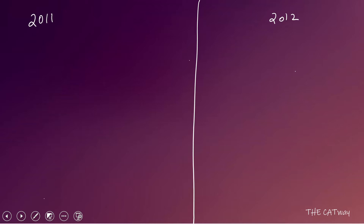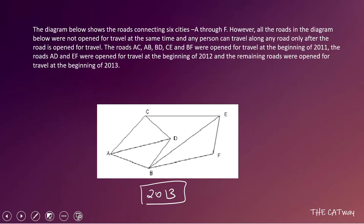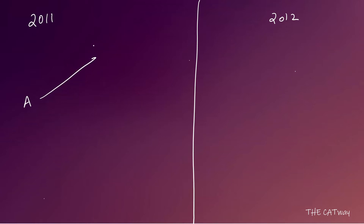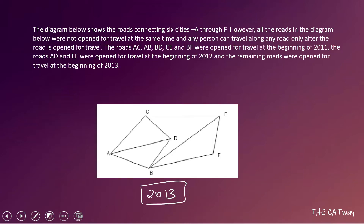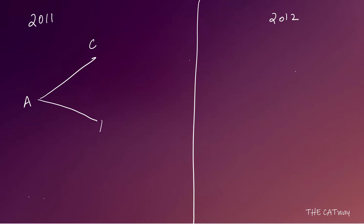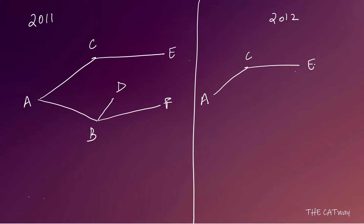In 2011, the open roads are: AC, AB, BD, BF, and CE. Let's draw these out. For 2012, two additional roads open: EF and AD. So we add D connected to A, and E connected to F, giving us the complete 2012 road structure.